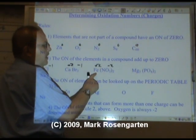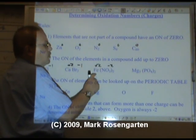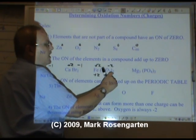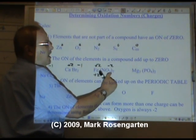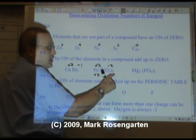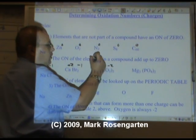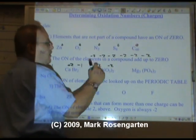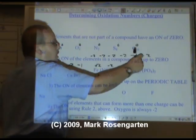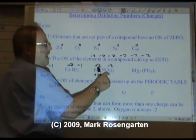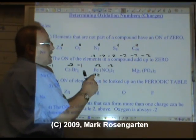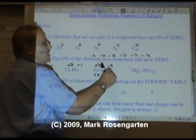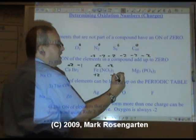There's one iron in the compound, so iron's total contribution to the charge is plus two. There's three times two is six oxygens. Now each of those six oxygens is minus two. There are six negative two oxygens in this compound. What are six minus twos? Six times minus two is minus twelve.